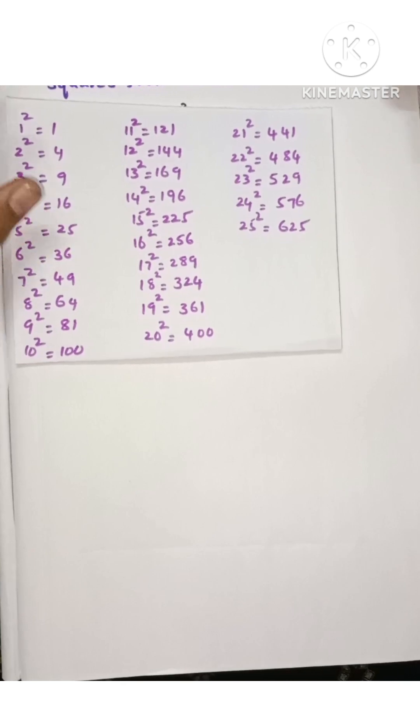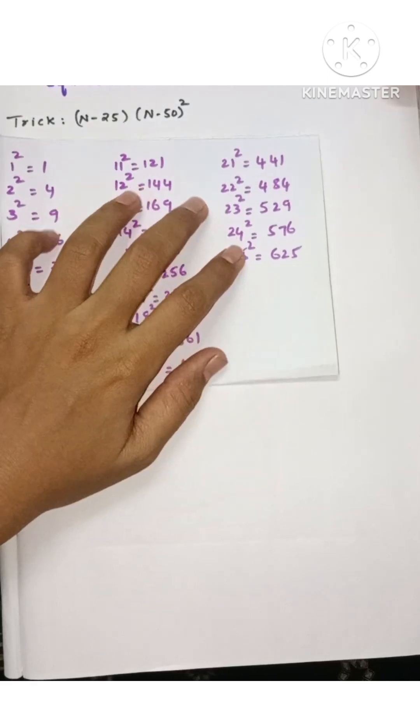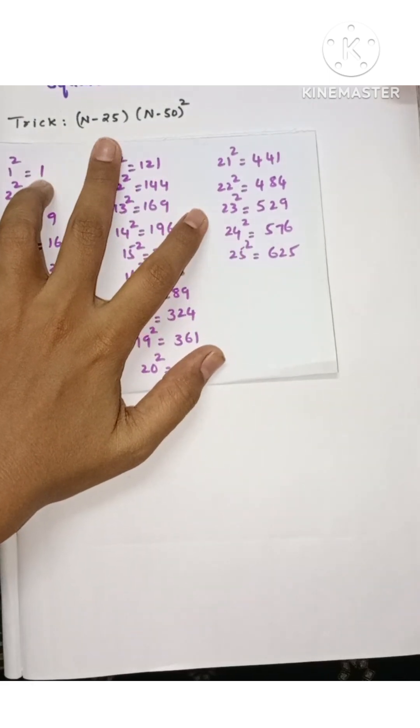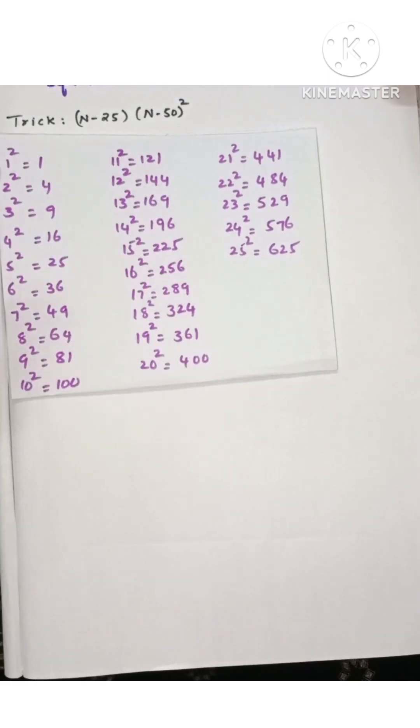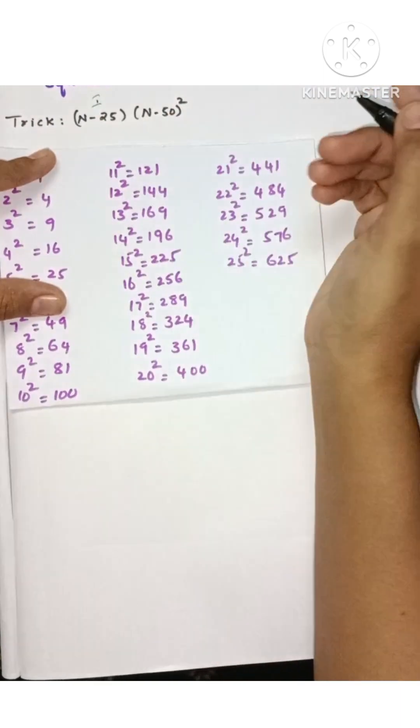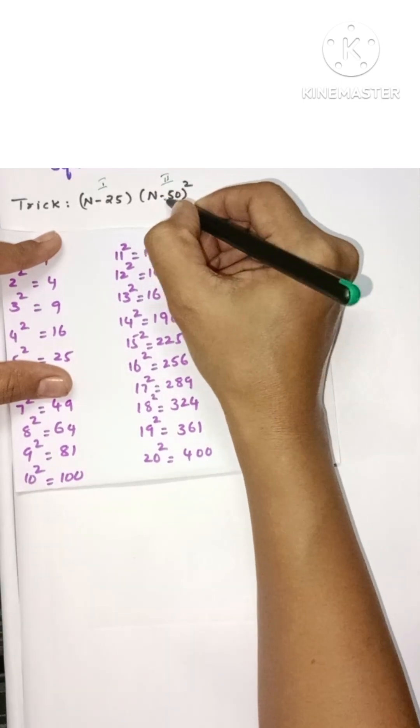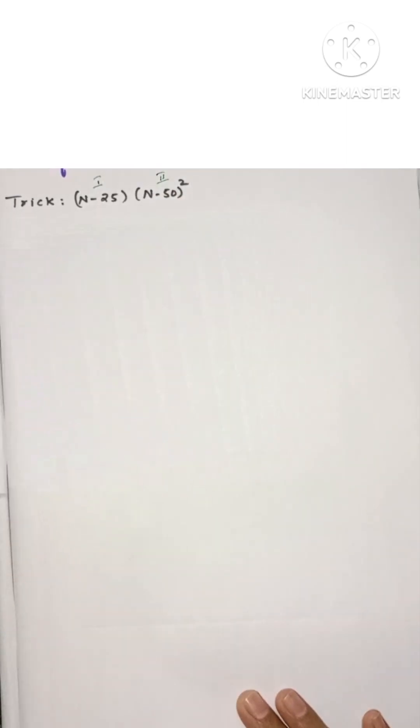From 25 to 75, the trick is to divide the answer into two parts: part 1 is number minus 25, and part 2 is number minus 50 whole square.